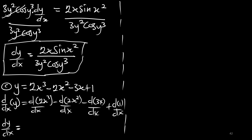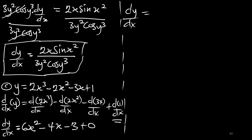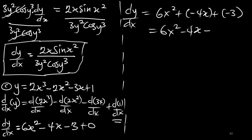Differentiating 2x cubed using the power rule: 3 multiplies 2 to give 6x squared. Differentiating 2x squared: 2 multiplies 2 to give 4x. Then minus 3, and the derivative of the constant 1 is 0. Therefore our derivative dy/dx is 6x squared minus 4x minus 3.